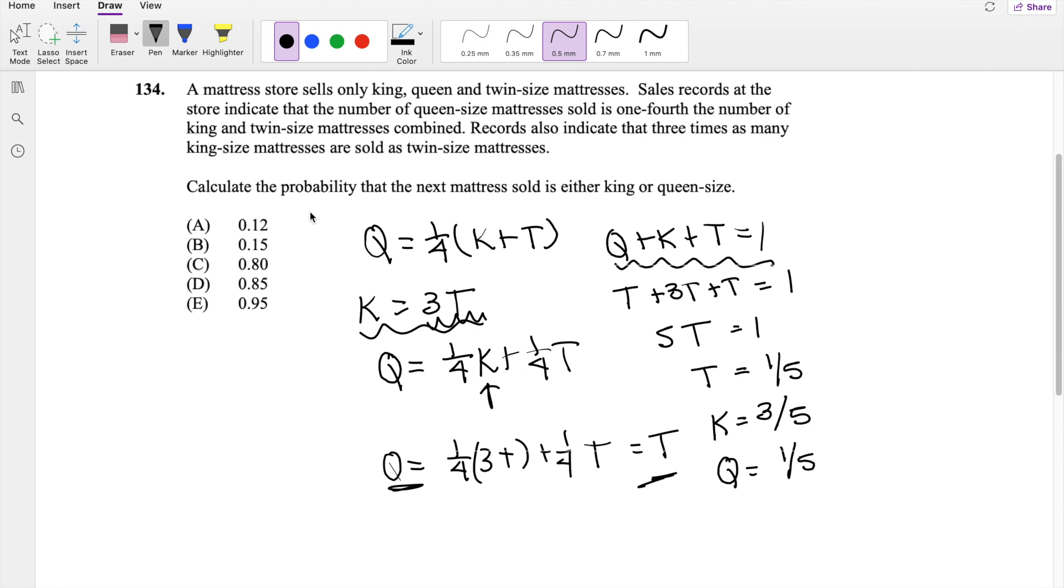So the probability of the next mattress that's sold is either king or queen is going to be three-fifths plus one-fifth, right? King plus queen, which is equal to four-fifths, our answer, C.